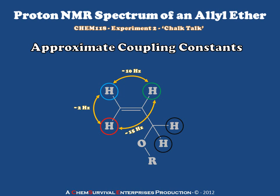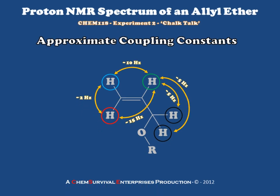The interior vinyl proton couples to the allyl protons. Because these are separated by a sigma bond only, which has free rotation, we expect the coupling constants to be more typical — such as 5, 6, or 7 hertz. Let's use these numbers to predict what we'll be seeing in the NMR spectrum.